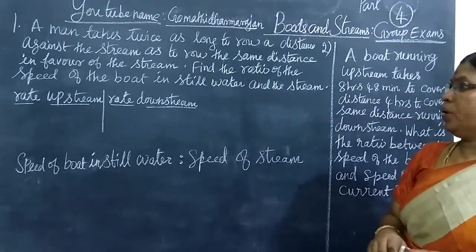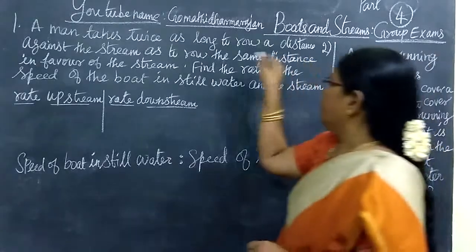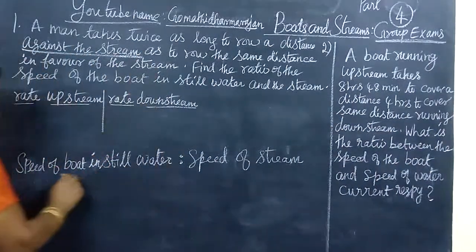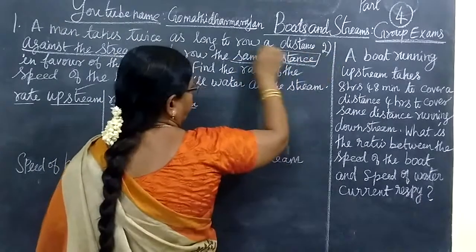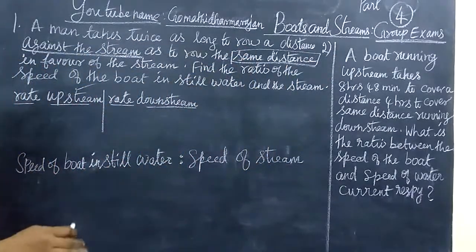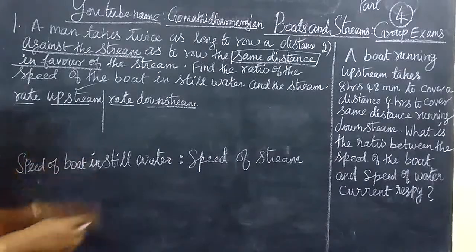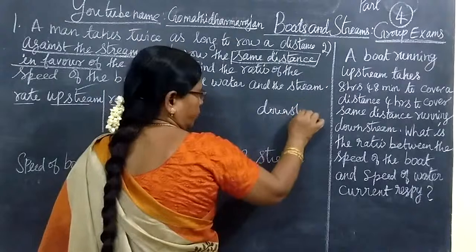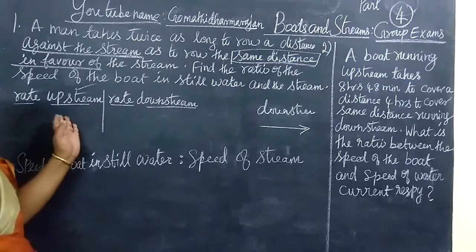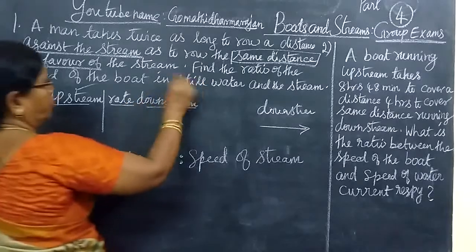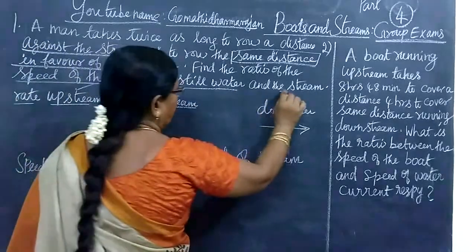Under both teams, the question given is: a man takes twice as long to row a distance against the stream as to row the same distance in favour of the stream — that is, upstream versus downstream. Then find the ratio of speed of the boat in still water and the speed of the stream.